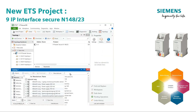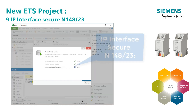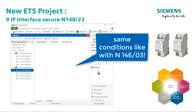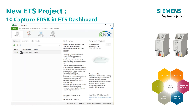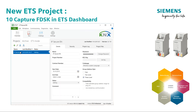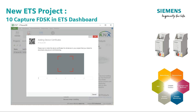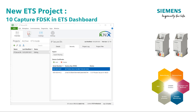Step 9: For the IP interface secure, the same rules apply as for the IP router secure, as you can see in the animation. Step 10: Capture the FDSK in the ETS dashboard. All project-related FDSKs can be found by opening the project settings. All device keys already registered for the project are stored in the Security tab, where further keys can also be entered, for example for the IP interface inserted earlier.